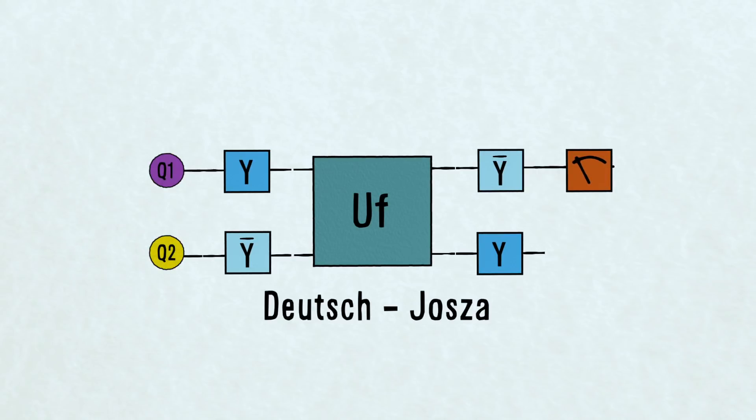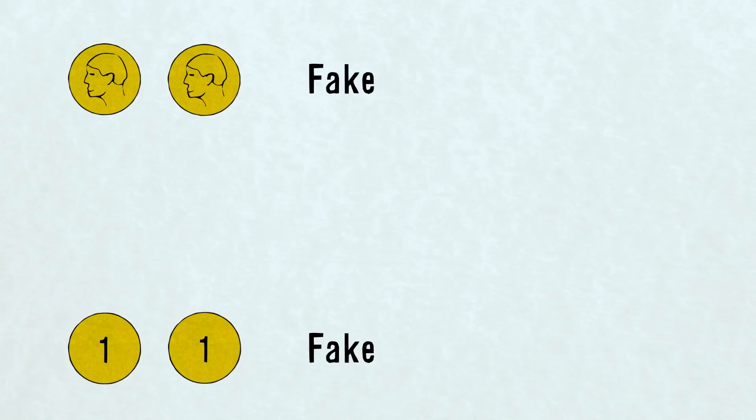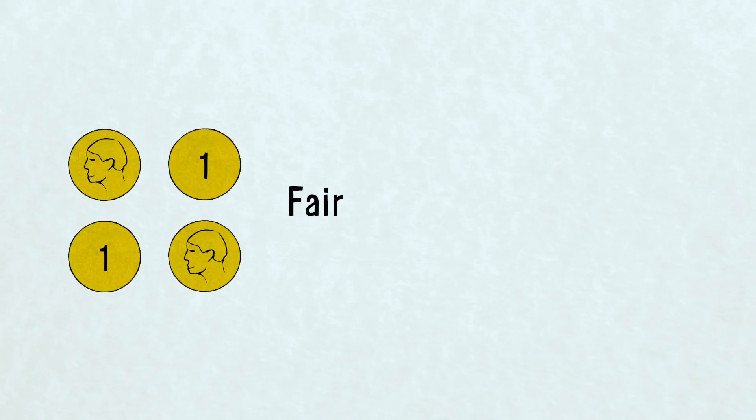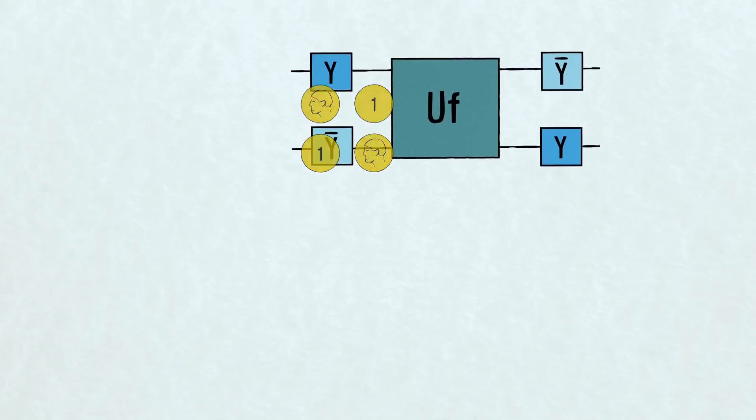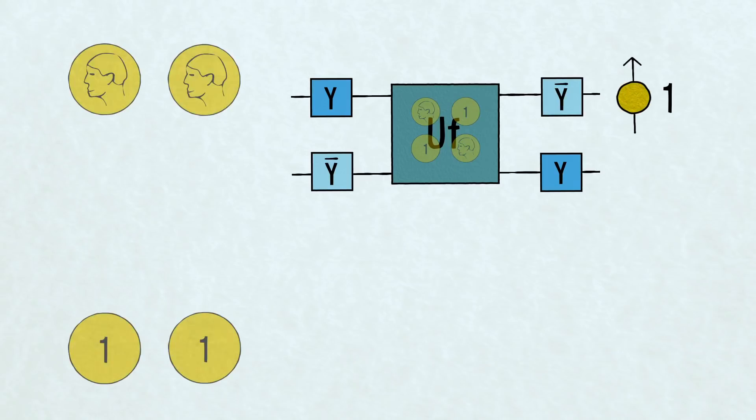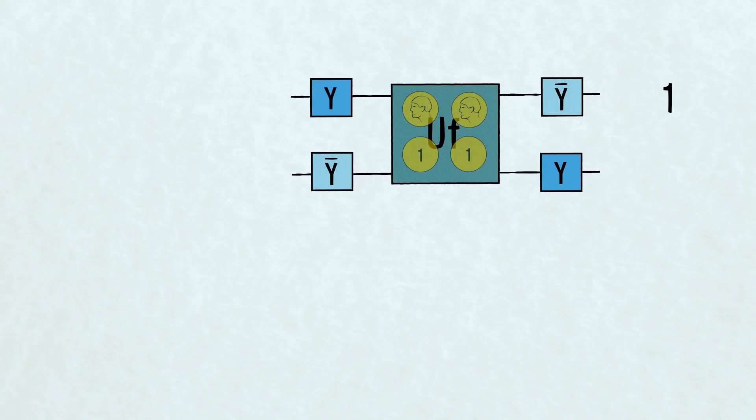One of the simplest quantum algorithms is the Deutsch-Jozsa algorithm, which checks whether a coin for a coin toss is fair. If a coin has heads on both sides, or tails on both sides, it's fake. But if it has heads and tails on either side, it is fair. For a fair coin, the quantum algorithm returns 1. For a false coin, it returns 0.